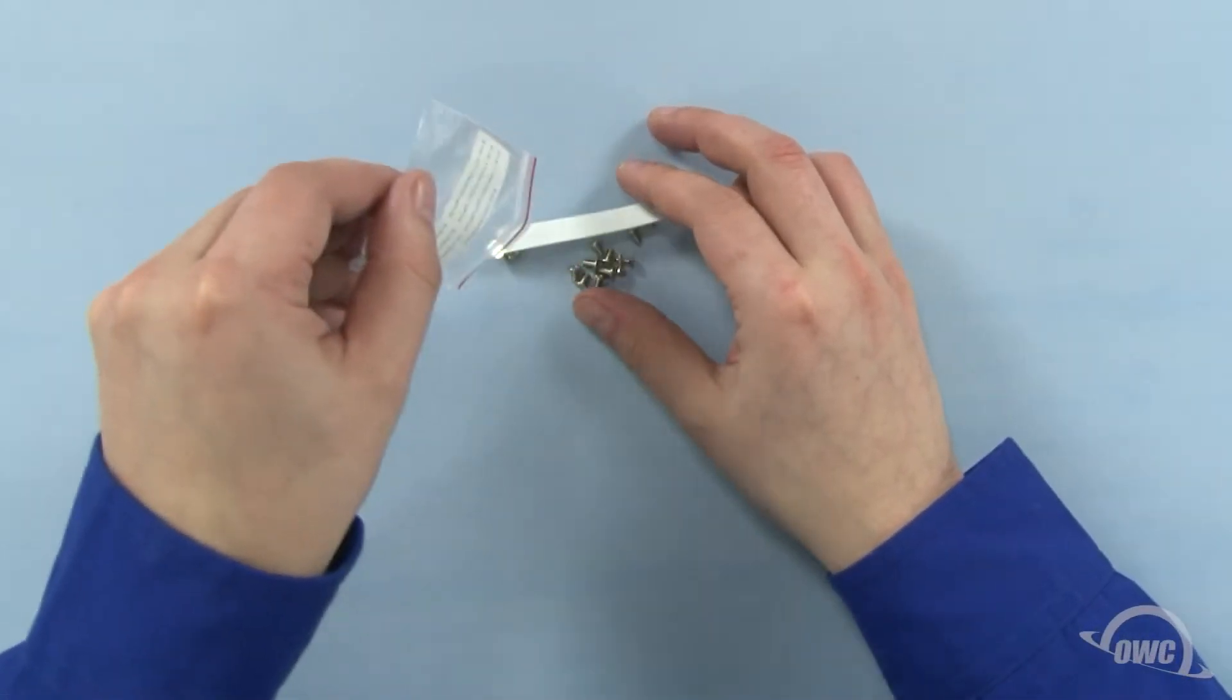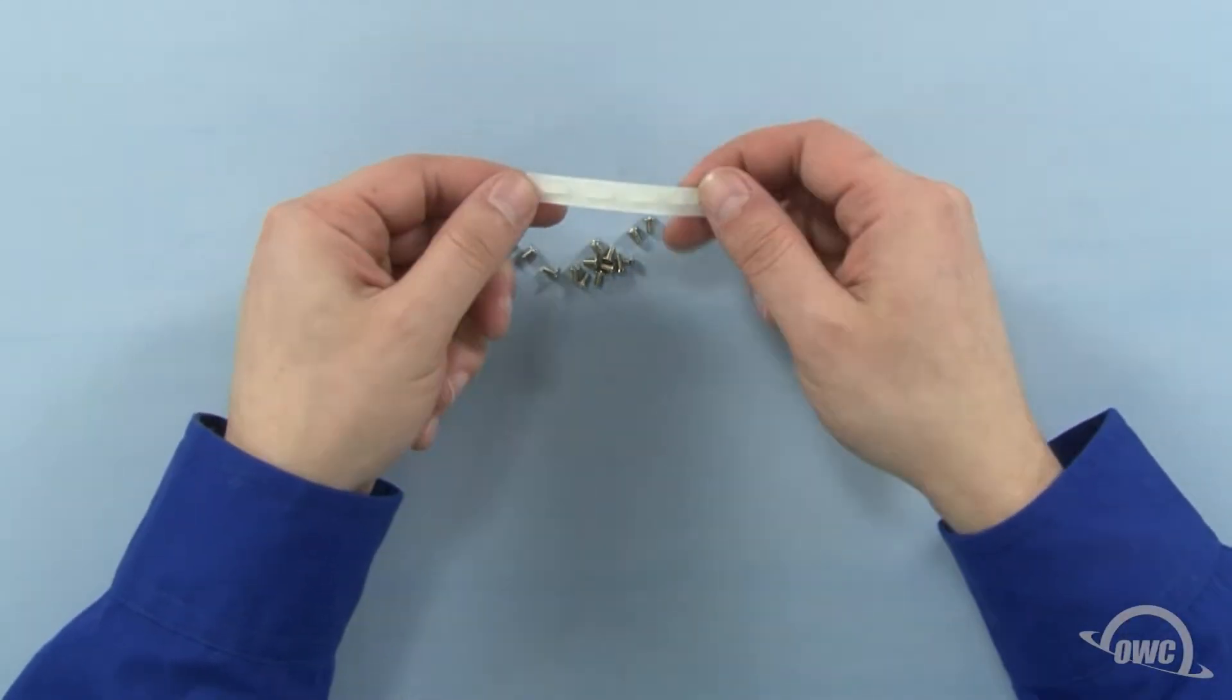There will also be a small bag. In this bag are four silicone feet, two smaller pointed screws, and twelve hard drive screws.